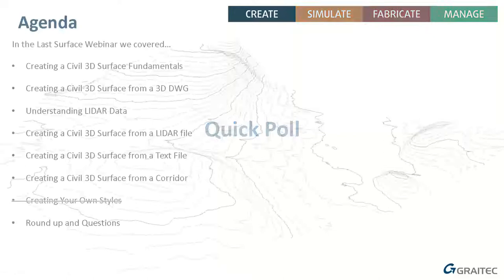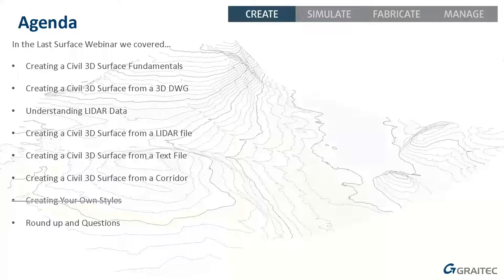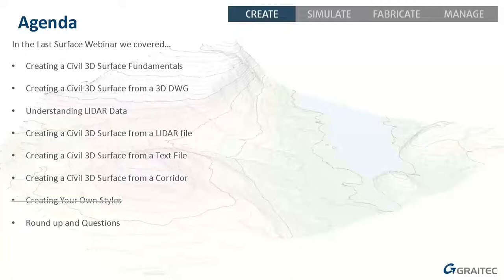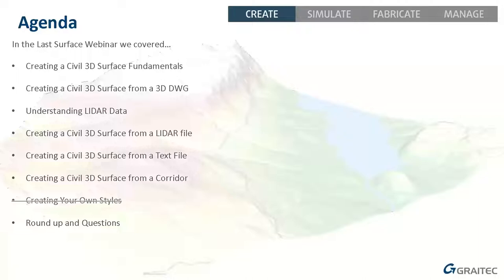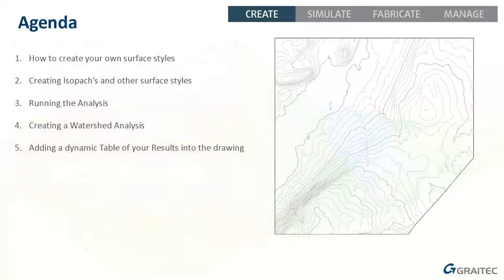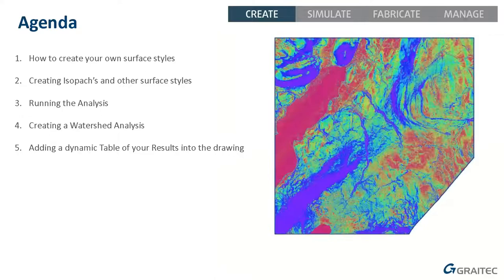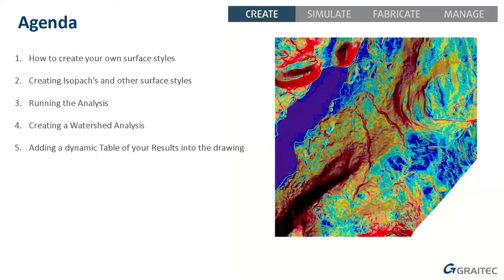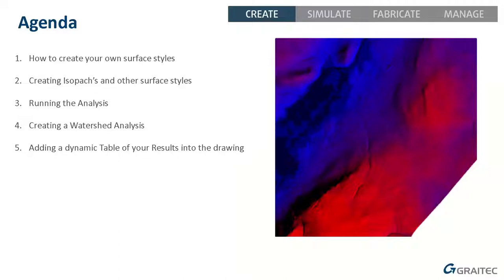In the last surface webinar we covered how to create surfaces from things like 3D DWGs, LiDAR data, and text data, as well as creating corridor surfaces. We ran out of time — I was planning on showing you how to create your own styles and how to run analysis on surfaces, and we didn't do either. So this is the purpose of Part Two. I'm going to cover surface styles, isopachs, slope arrows, watershed analysis, and adding dynamic tables.